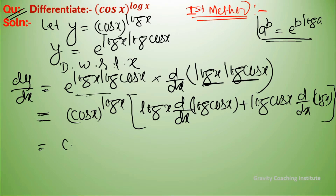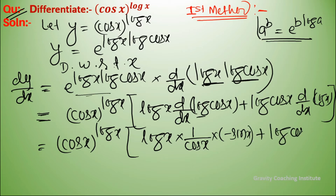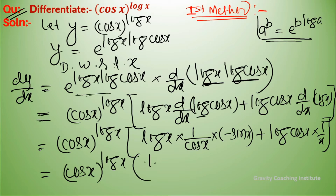So this equals cos x to the power log x, and using the chain rule: log x times 1 upon cos x times minus sin x, plus log cos x times 1 upon x. This gives log cos x upon x minus sin x over cos x times log x.